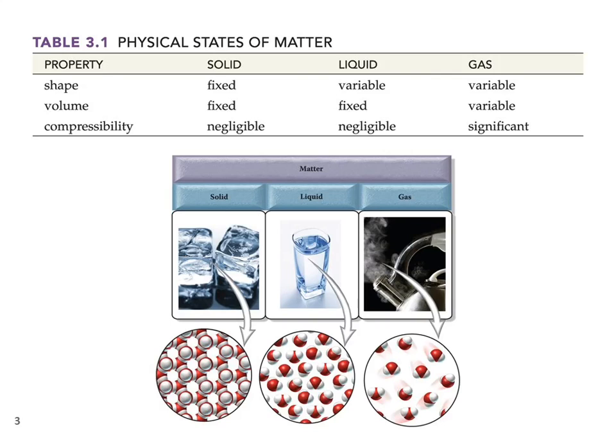So let's talk about the physical states of matter. You should definitely read this part in your textbook as well. But I'm just going to go over the pictures and the table. So three different properties, shape, volume, and compressibility, are going to be different between solids, liquids, and gases. And we need to be able to identify what they are.